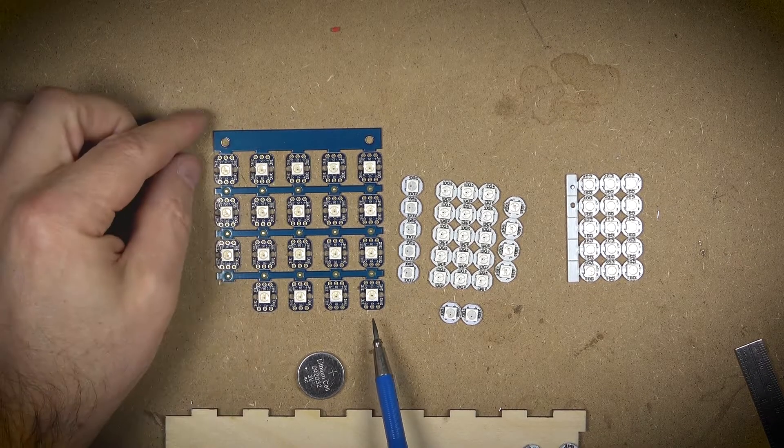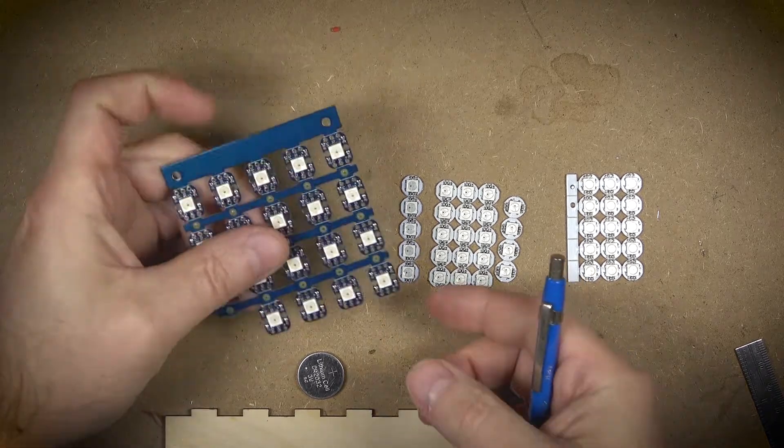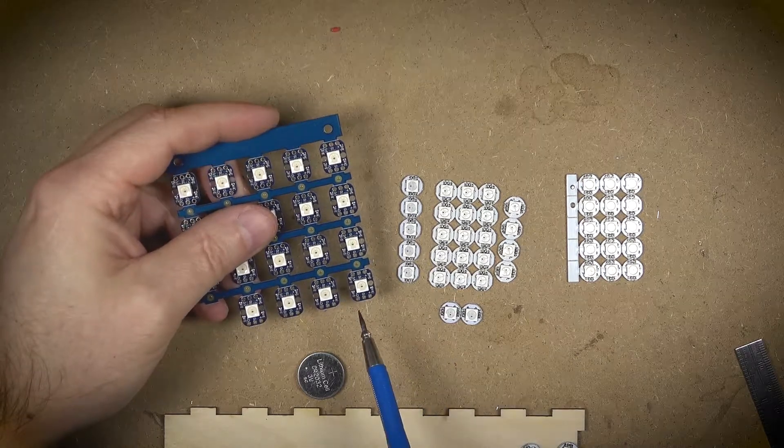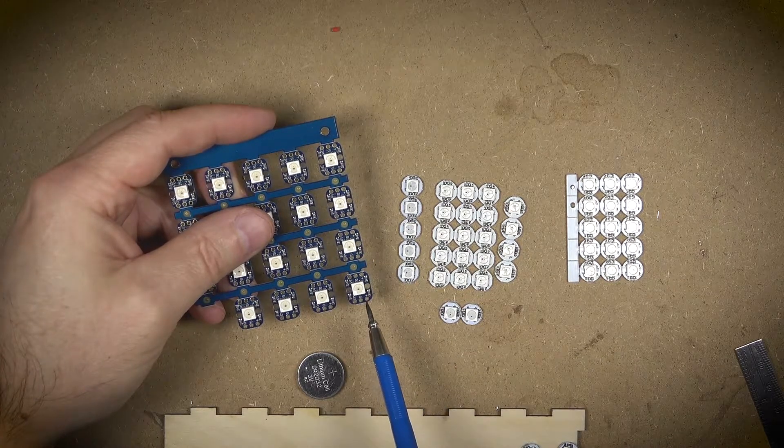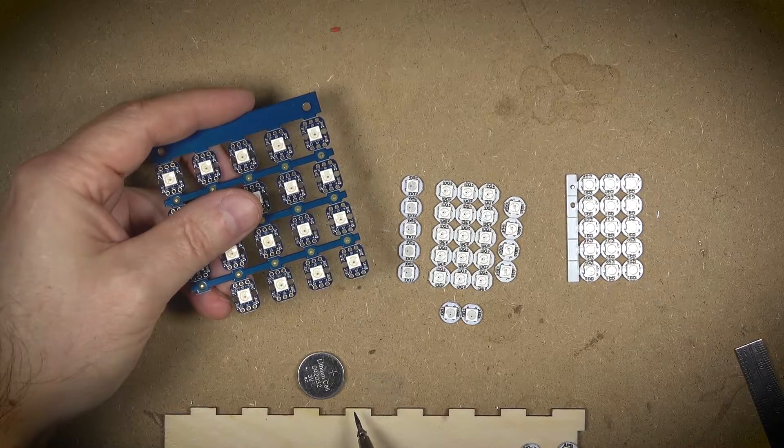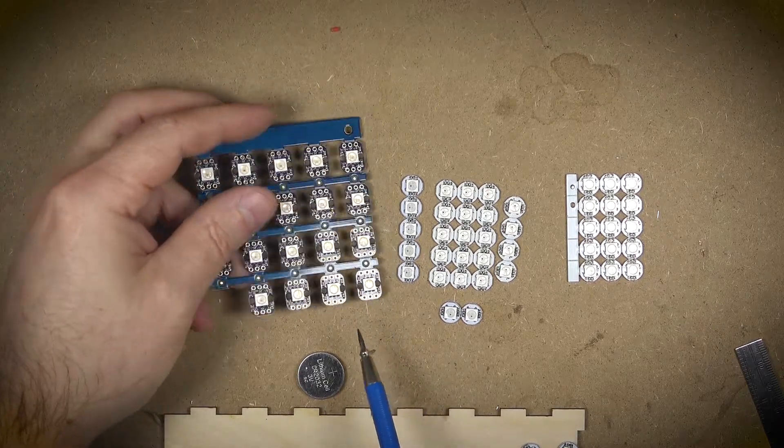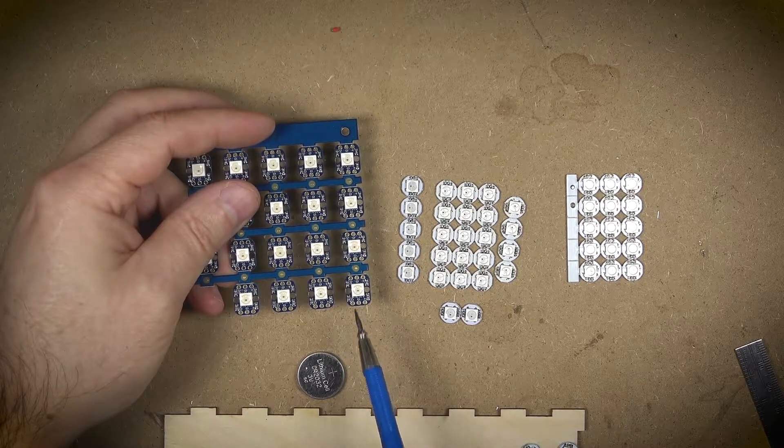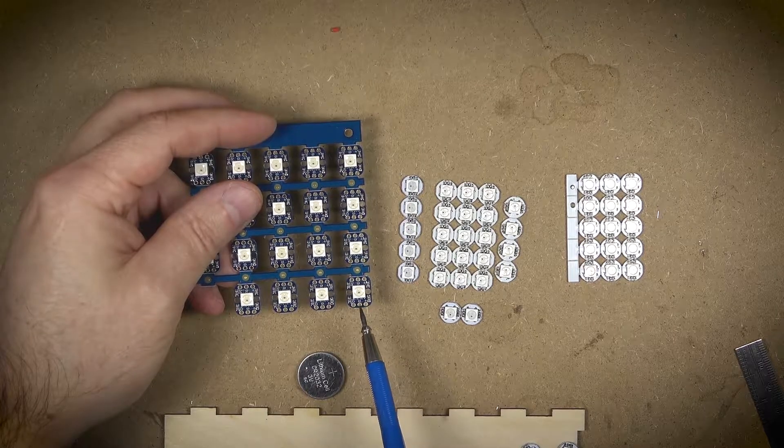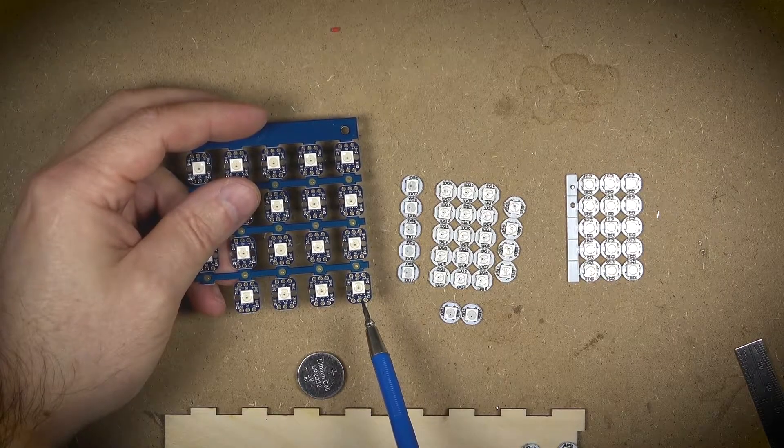A quick trip down memory lane for those who aren't familiar with NeoPixels. They are RGB and RGBW LEDs that are controlled with microcontrollers through these little connections. They come in a bunch of different form factors but they're generally controlled through a single data pin or data line, and then the other two connections are for ground and power.